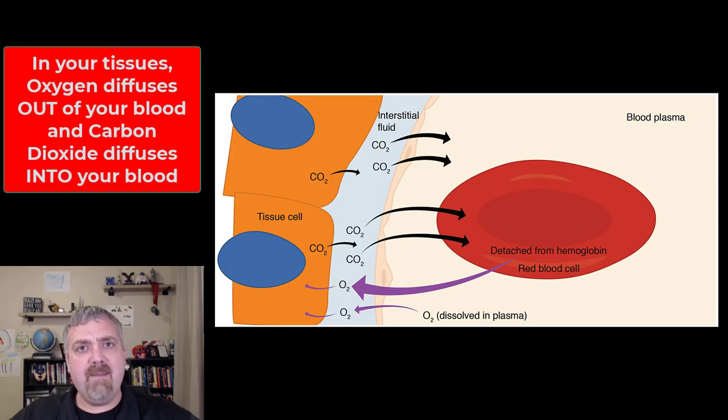And then we go to the tissues and the opposite happens. Now the blood is being pumped from your left ventricle through your aorta, wherever it is going to go and now this oxygen rich arterial blood is going to drop off oxygen instead of picking it up because there is more oxygen in your blood than there is in the tissues.